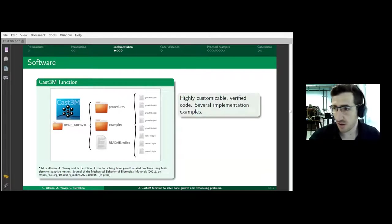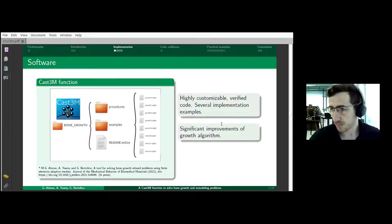This is available for anyone who faces the same issues. Essentially, this is a highly customizable code. We published several implementation examples. We did some significant improvements in the growth algorithm. I don't have time to explain it in detail, but we achieved computing cost reductions in the order of 10 to 20 times compared with other algorithms.